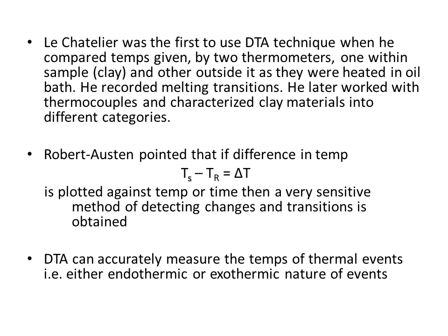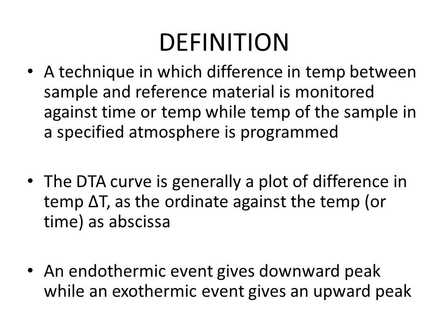DTA can accurately measure the temperatures of thermal events — whether the event is endothermic or exothermic — so we can find these easily using the DTA technique. The definition: DTA is a technique in which the difference in temperature between a sample and a reference material is monitored against time or temperature, while the temperature of the sample in a specified atmosphere is programmed. We take the difference in temperature between sample and reference material and plot it against time or temperature.